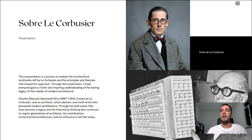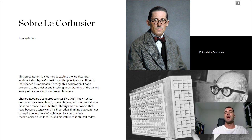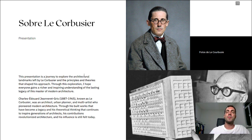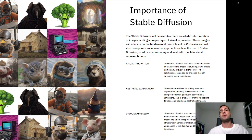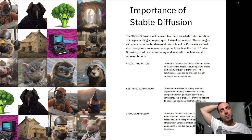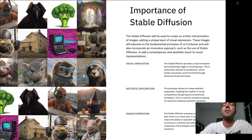He was an architect, urban planner, and multi-artist who pioneered modern architecture. Through his built works that have become a legacy, and his theoretical thinking that continues to inspire generations of architects, his contributions revolutionized architecture and his influence is still felt today. Le Corbusier was a famous architect in his times and until nowadays. And with Stable Diffusion, I will talk a bit about how we are using it.